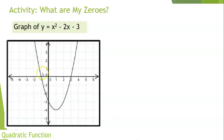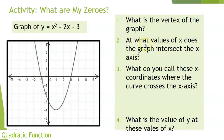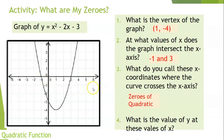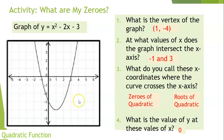This is a graph of x² − 2x − 3. The vertex is at (1, −4). The graph intersects the x-axis at x = −1 and x = 3. What do we call −1 and 3? They are considered as the zeros of the quadratic, or basically the roots of the quadratic. The value of y at these x-values is 0, which is why they are considered as the x-intercepts.